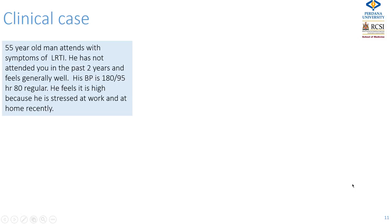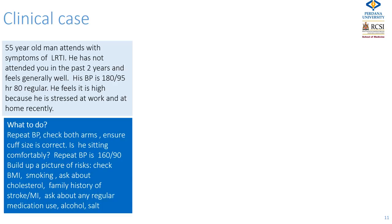Let's look at this case. A 55-year-old man attends with symptoms of a lower respiratory tract infection, not having attended in the past two years, and feels generally well. His blood pressure today is 180 over 95, heart rate is 80 per minute and regular. He feels it is high because he is stressed at work and at home. Repeat the blood pressure, check both arms, ensure the cuff size is correct — on repeat it's 160 over 90.